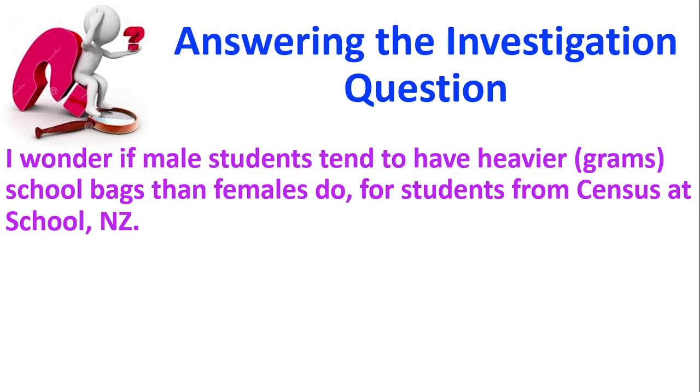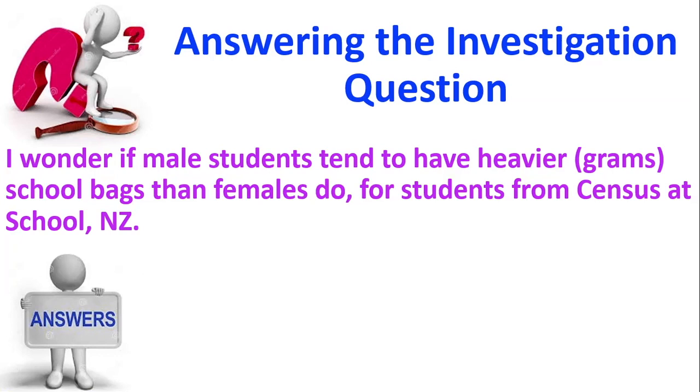So now I'm going to use that to answer my investigation question. So this is what the investigation question would have been. I wonder if male students tend to have heavier bags than females do for students at census at school NZ. So how do I answer this question? This is when I look and say, can I make the call? If I can make the call, I have enough evidence. If I can't make the call, I do not have enough evidence. It tells me the medians are too close together and they could be the same. So that's what I'm going to say is in my sample, I don't have enough evidence that the male students tend to have heavier school bags than females. And you notice I've used very similar wording as the investigation question itself. I've just added on this bit at the start, which saying I don't have enough evidence.